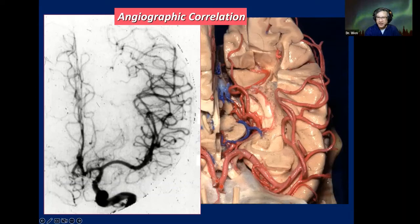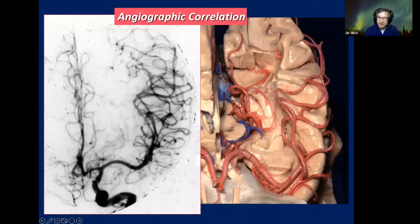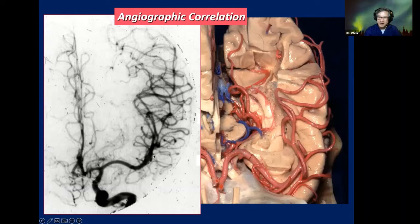Why is one artery running straight? Because it is located at the planum temporale — 'planum' means flat — there is no space for the artery to make a curve. But why does this other one make such a curve? Because it is located anterior to Heschl's gyrus. So just by looking at the angiography, I know more or less where the lesion is located. The inferior trunk of MCA runs in the inferior limiting sulcus of the insula.